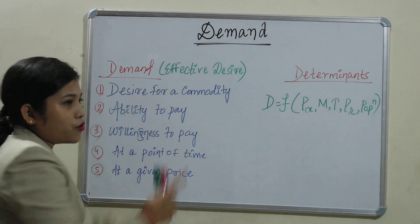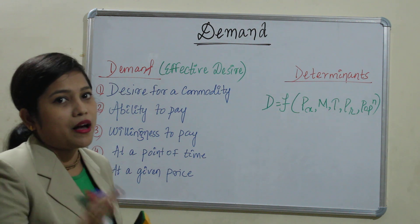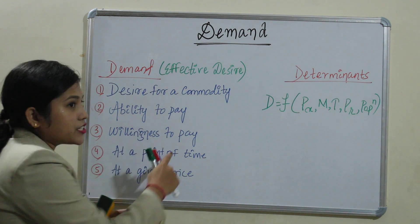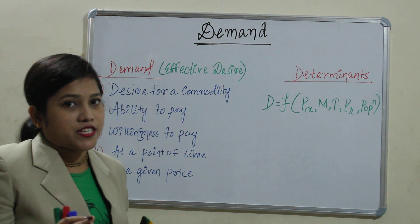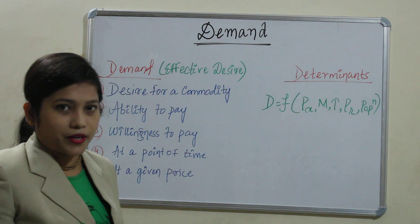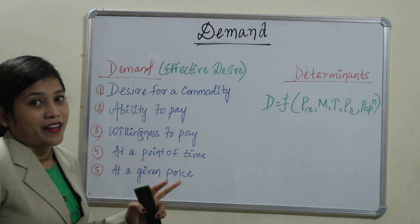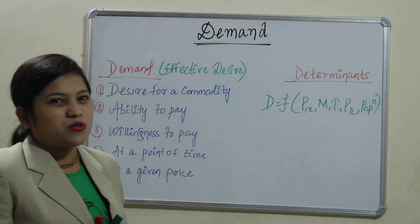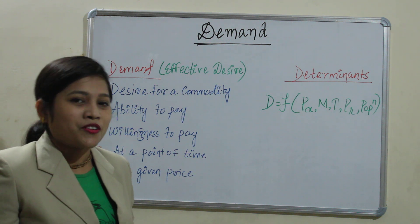What are those five characters? First, desire for a commodity — we should have the desire to have that commodity. Second is ability to pay — we should have enough budget to pay for it. Third is willingness to pay — it's not enough to have the money; there must also be willingness to pay for that commodity.